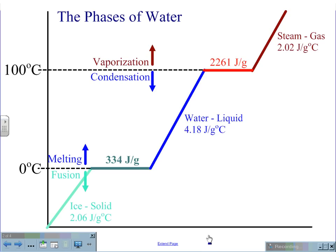Between 0 and 100 degrees Celsius, water is a liquid and its specific heat capacity is 4.18 joules per grams degrees Celsius. Above 100 degrees Celsius, water turns to steam or gas and has a specific heat of 2.02 joules per grams degrees Celsius. At 0 degrees Celsius, the melting and fusion phase change point, the specific heat capacity of water is 334 joules per gram. And at the vaporization and condensation point at 100 degrees Celsius, the specific heat capacity is 2,261 joules per gram.